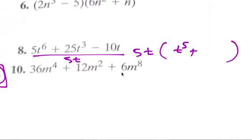That makes 6. Plus 5t squared minus 2, and that's your answer right there.